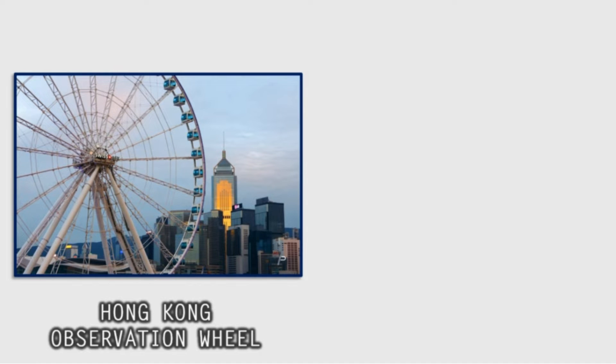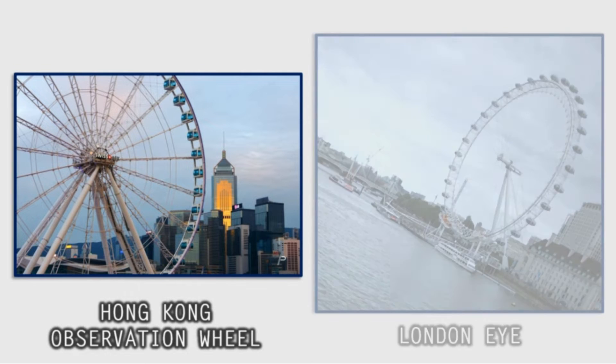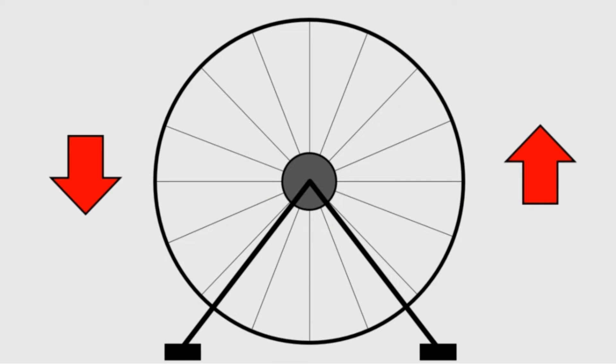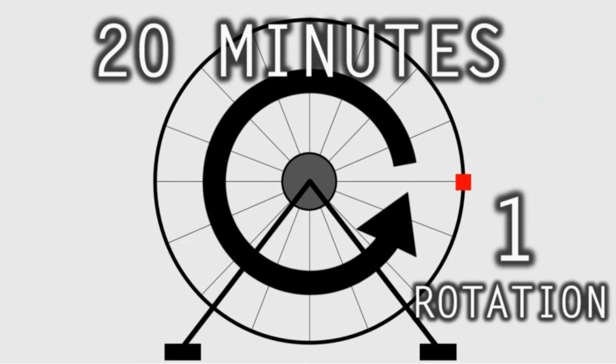To begin, let's consider the Hong Kong Observation Wheel to understand a sine wave, or the London Eye, or any other ferris or giant wheel. They're all circular. Let's assume it rotates counterclockwise, and you're taking a ride on it. There you are, as a red square, and it takes about 20 minutes to complete one rotation. If you track the motion, you'll just go around in a circle and end up at the starting position in 20 minutes.